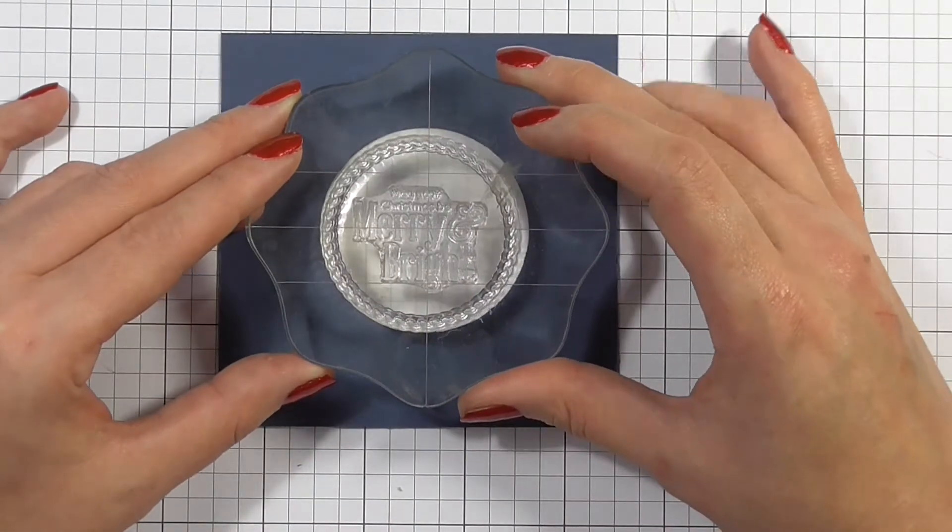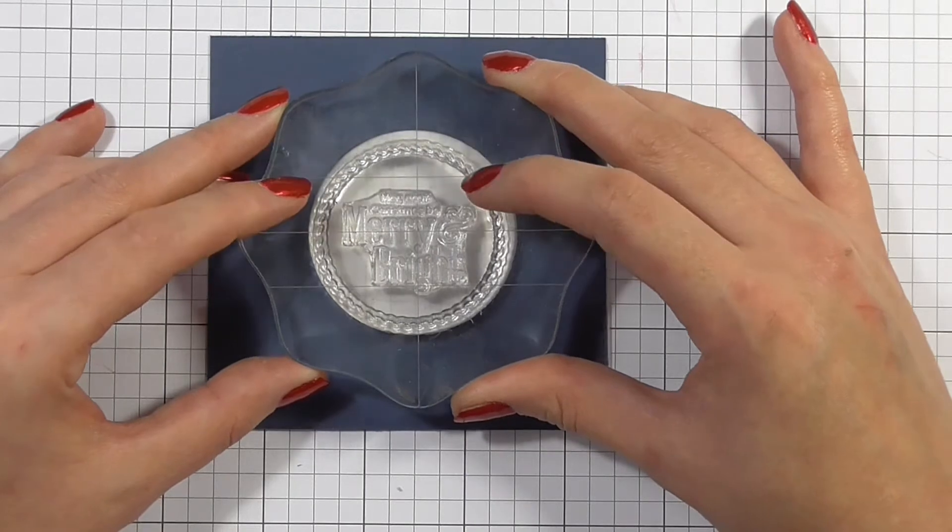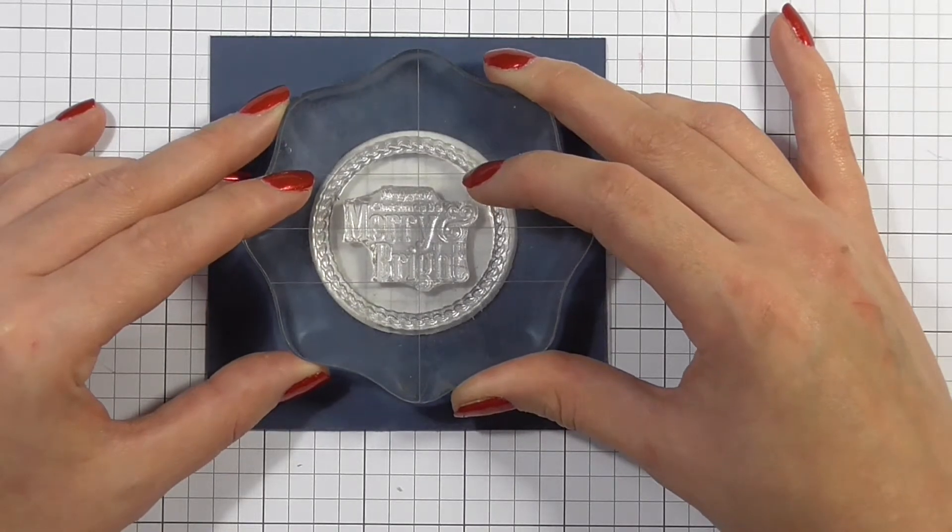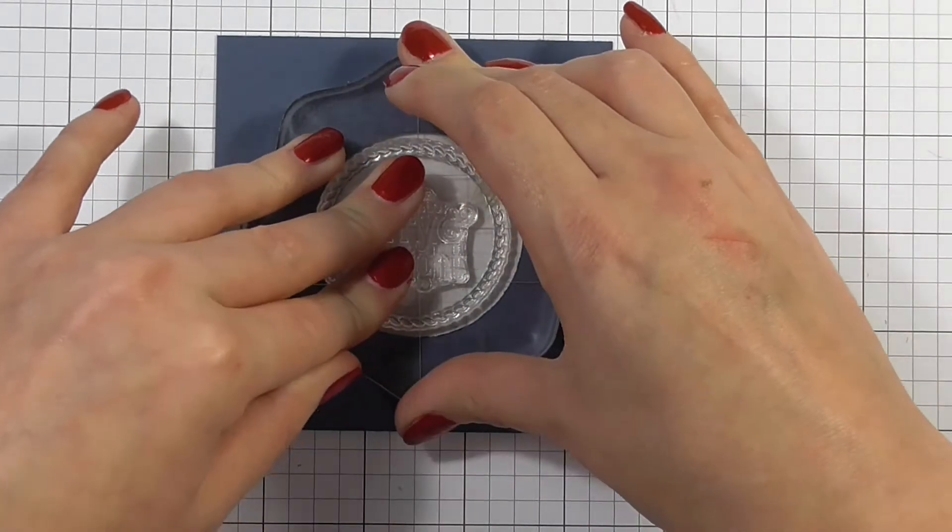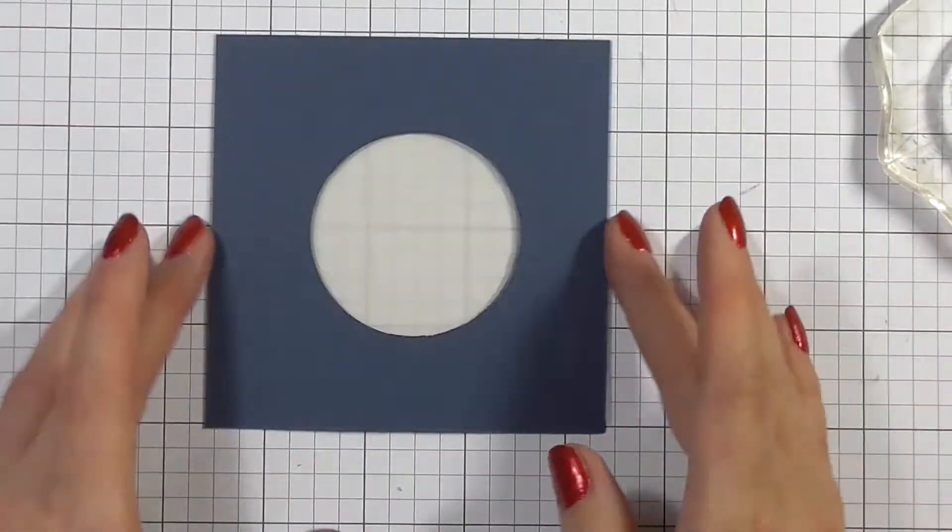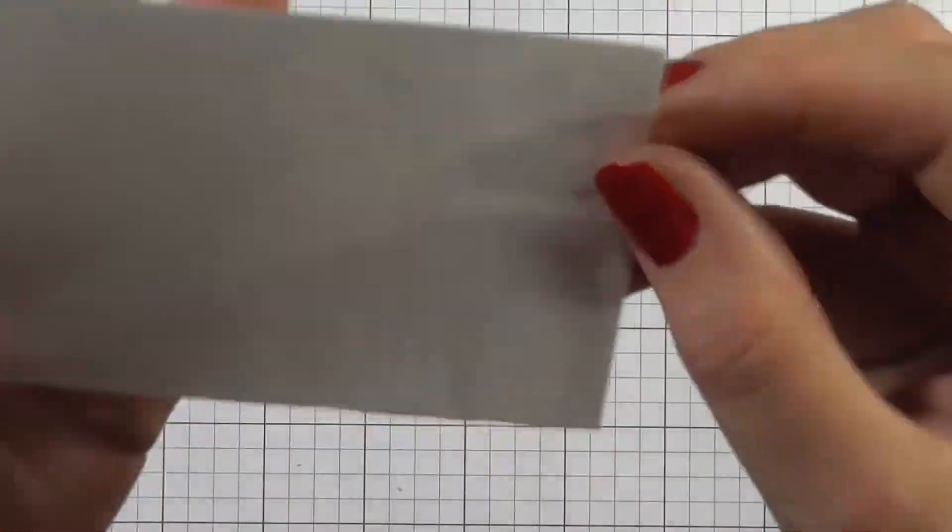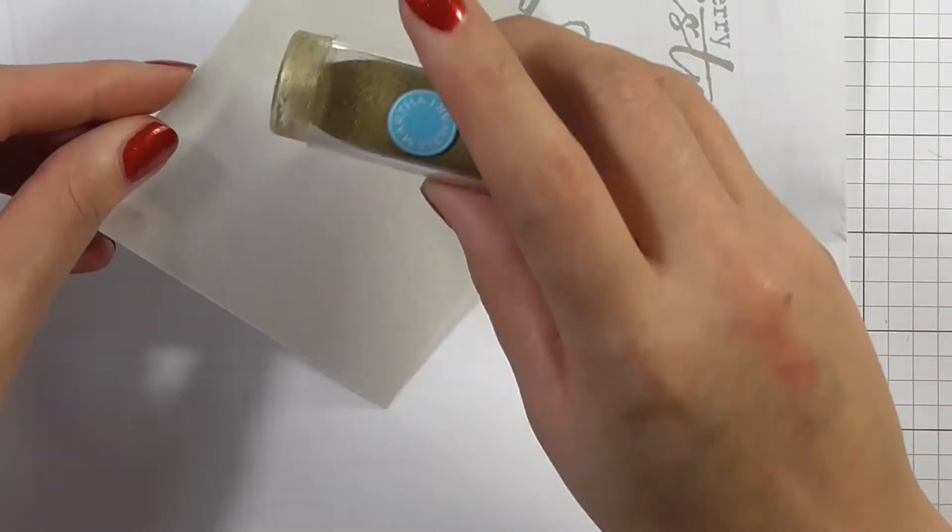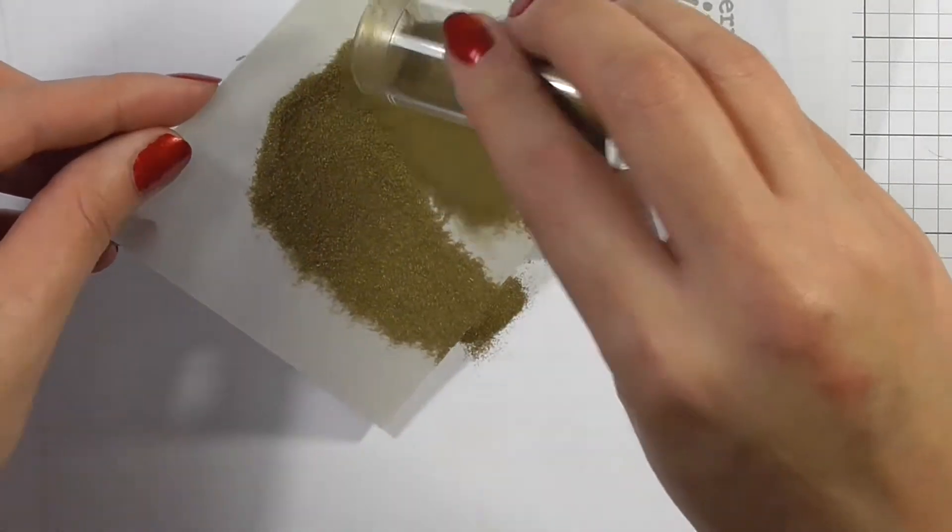So I've never used heat resistant acetate before, but if you do plan on doing any kind of heat embossing, then this is the type of acetate that you need because the normal acetate will just sort of melt and warp and it wouldn't be very nice at all. So I'll have a link in the description below to all of the supplies used, including this heat resistant acetate.